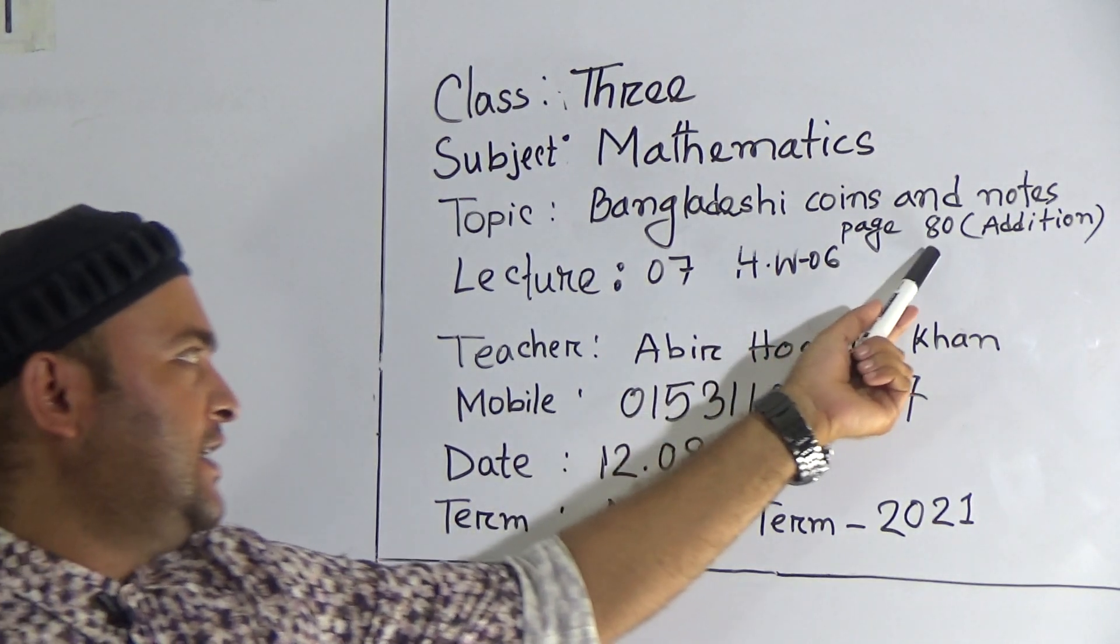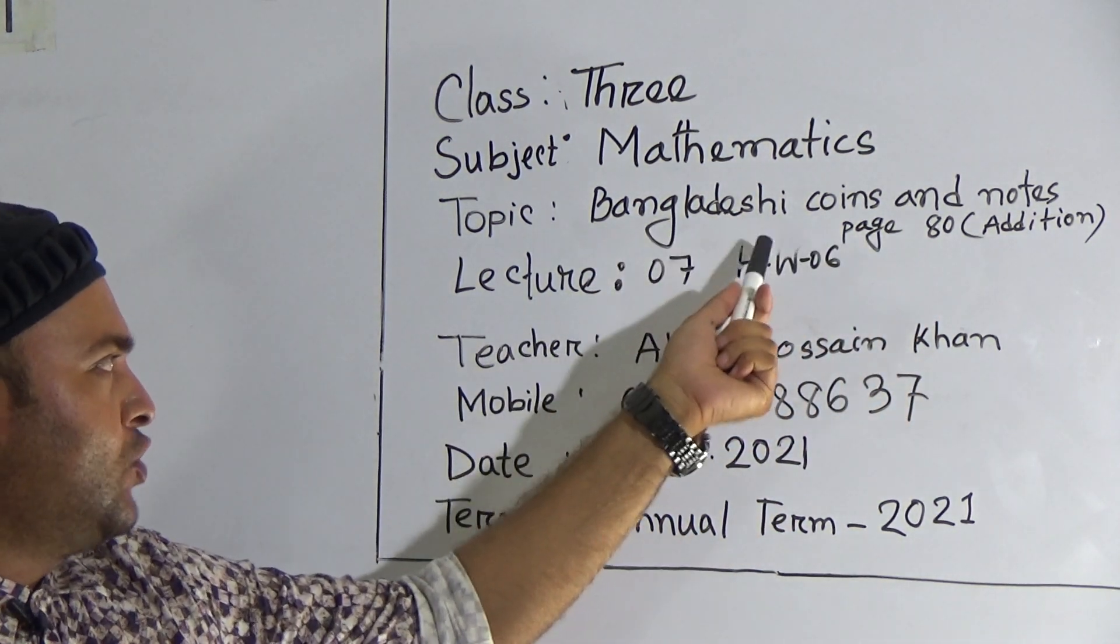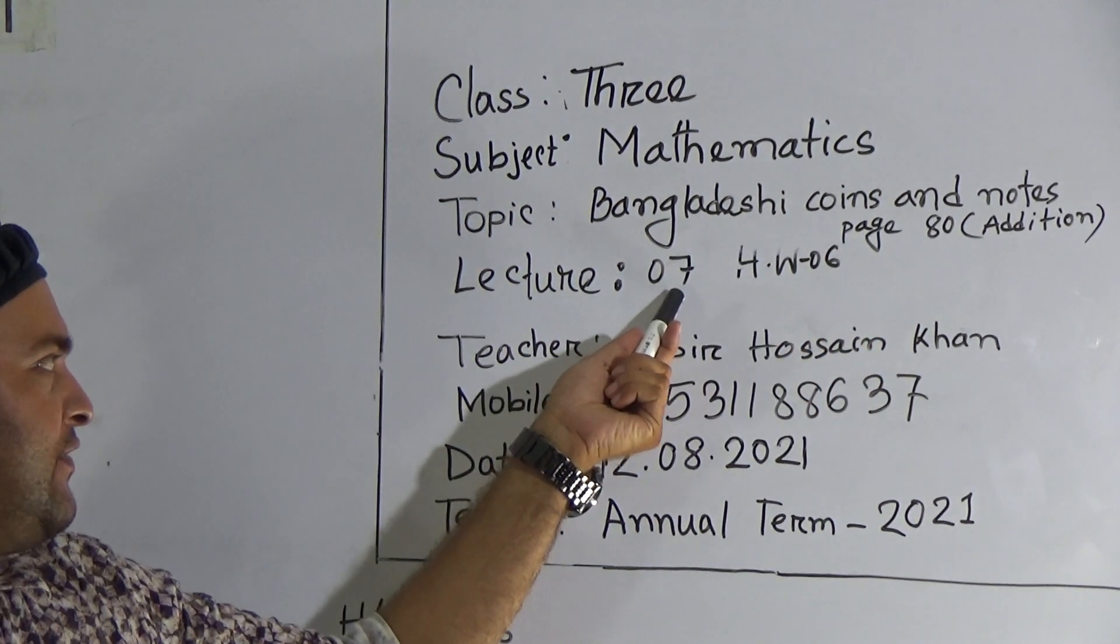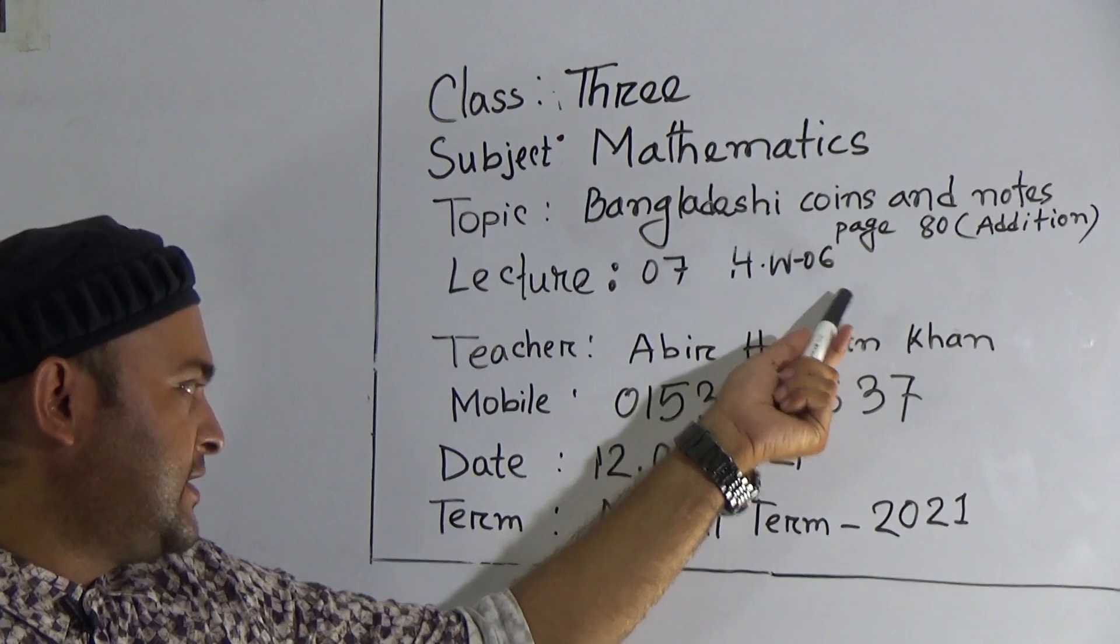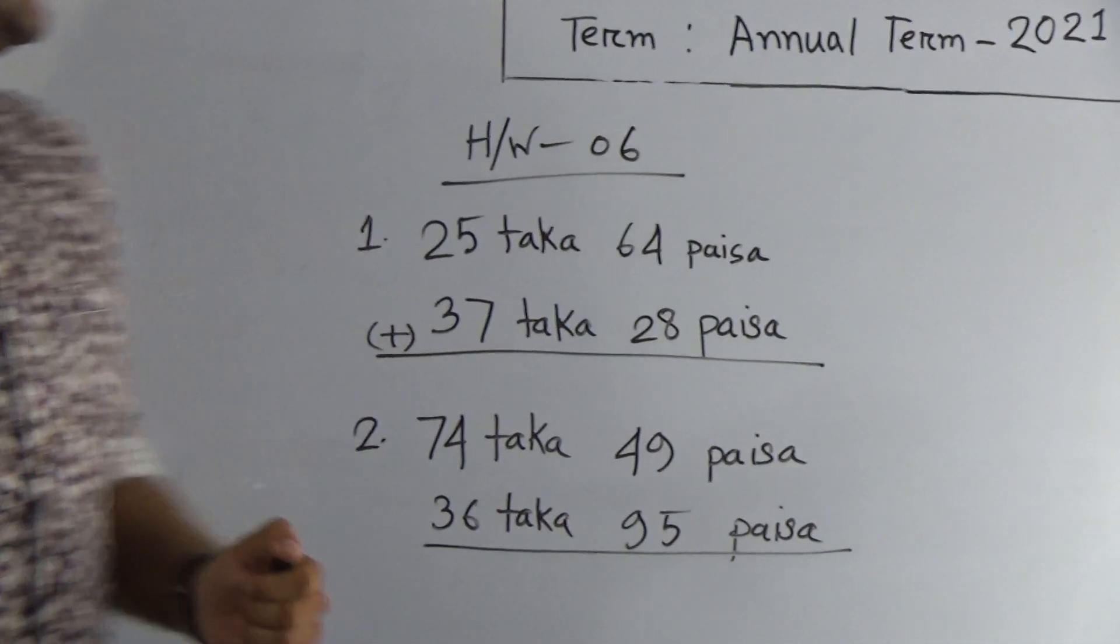We learn today how can we add notes and coins and paisa. Our today's lecture is number seven and our homework number is six. You have to submit homework on your campus next Saturday. Now let's go to start the class.